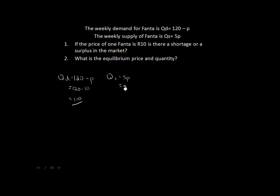On the supply side we take our price of 10 and fill it in: 5 times 10 equals 50. So supply is 50 and quantity demanded is 110 — we demand more than what is supplied. That means there is a shortage in the market. The size of that shortage is 110 minus 50, which equals 60 cans per week.